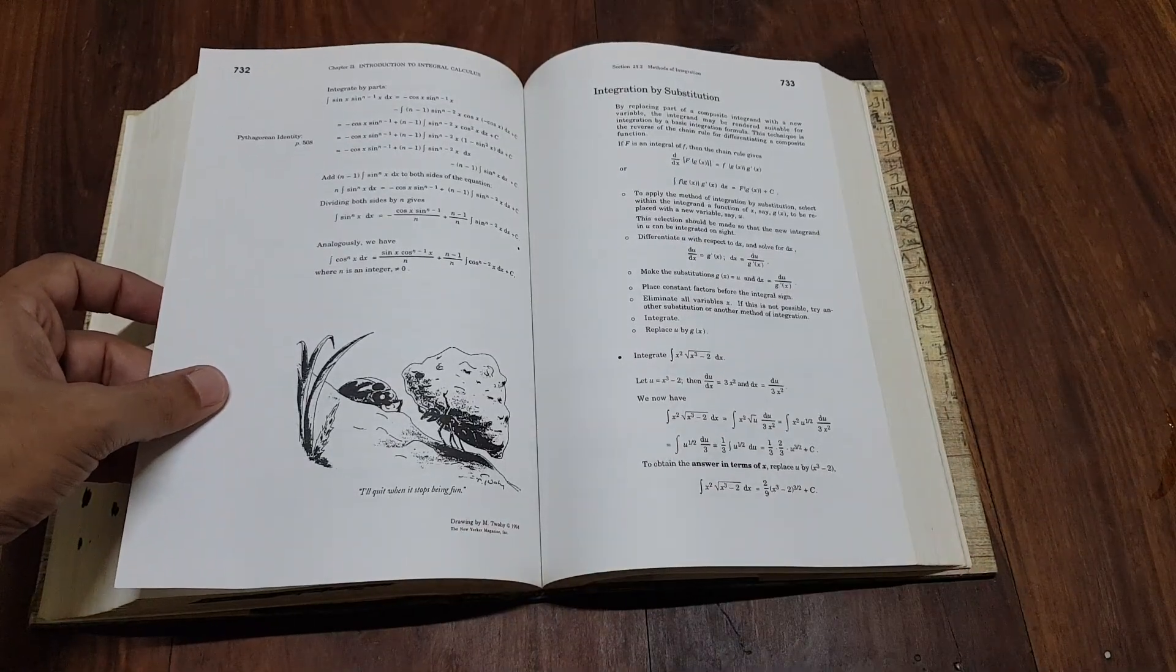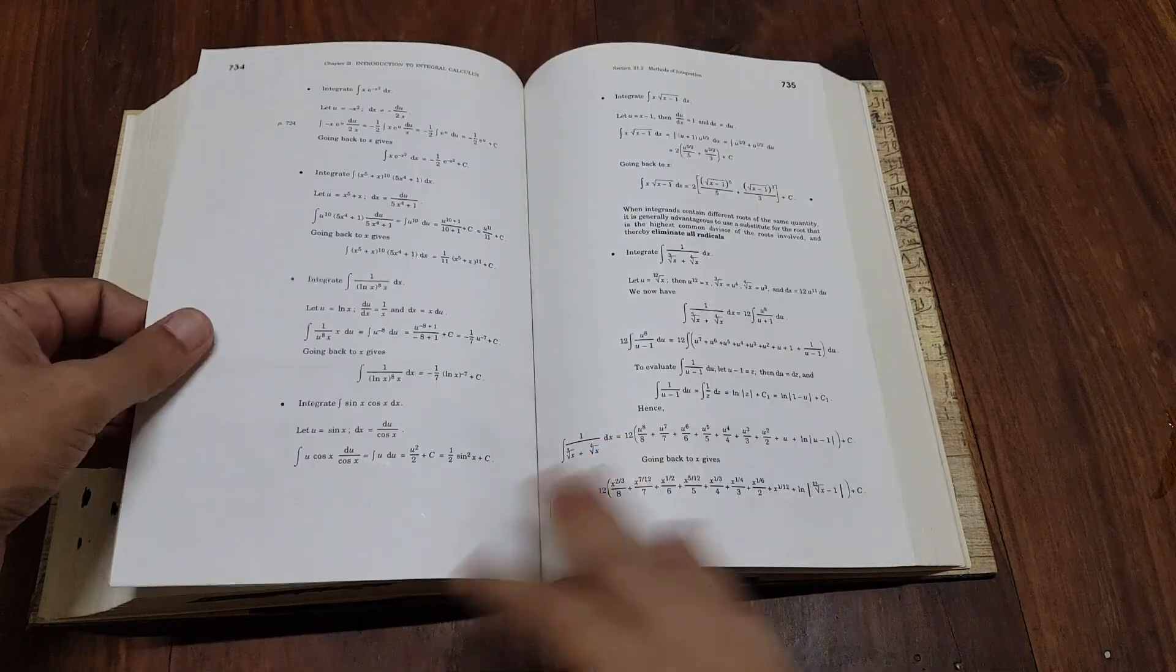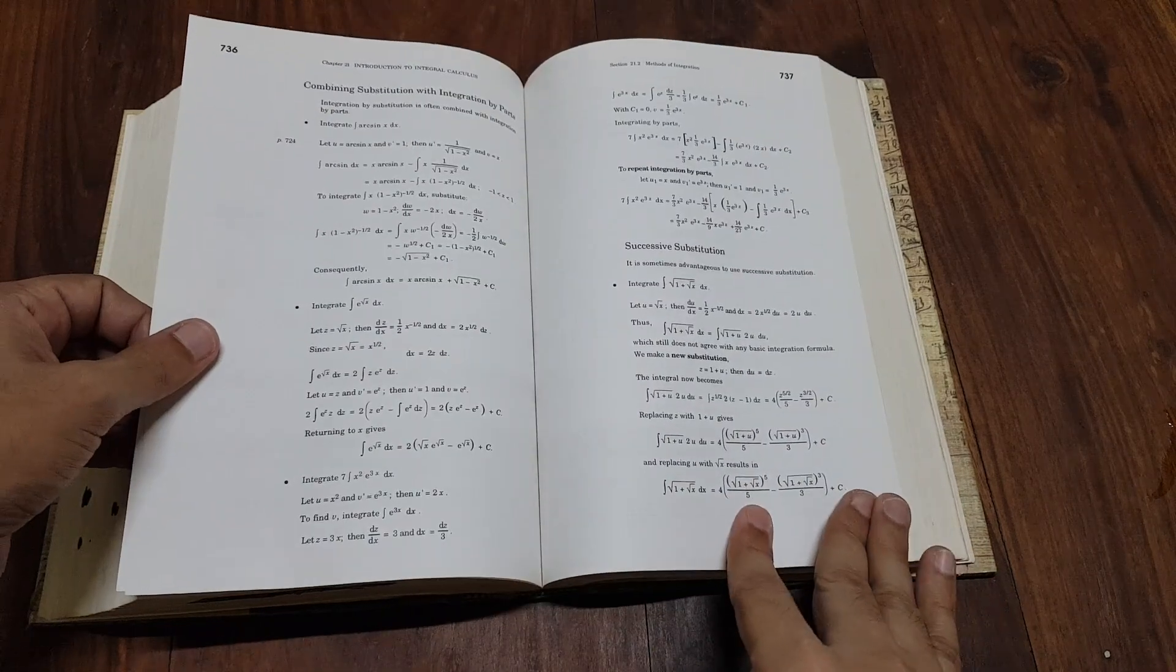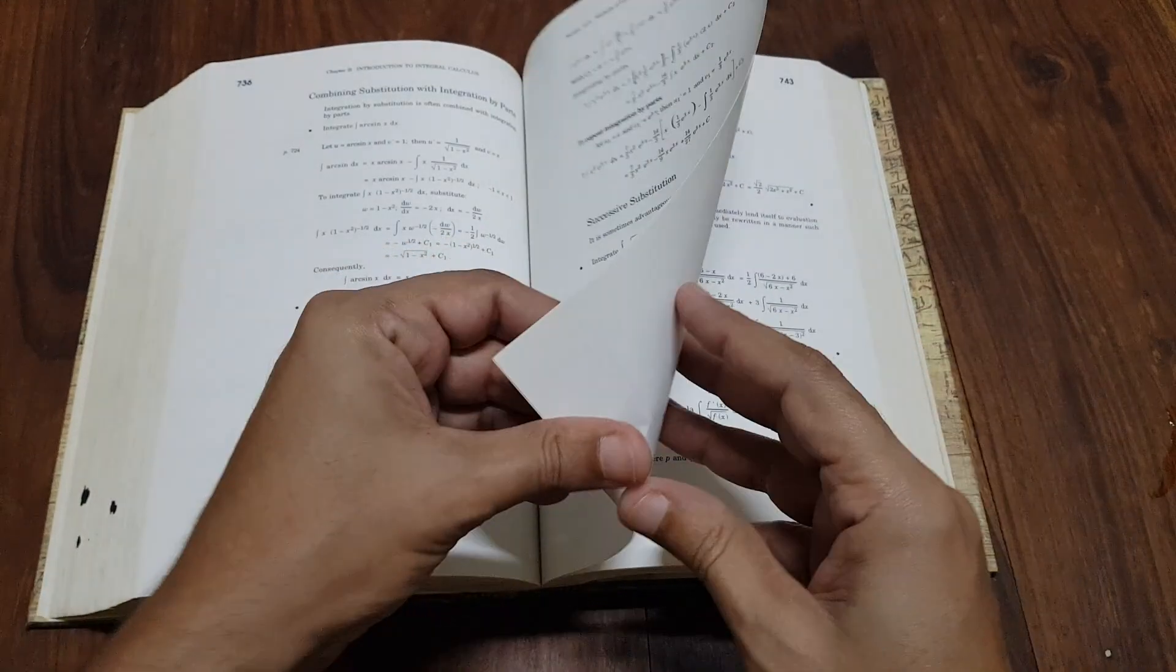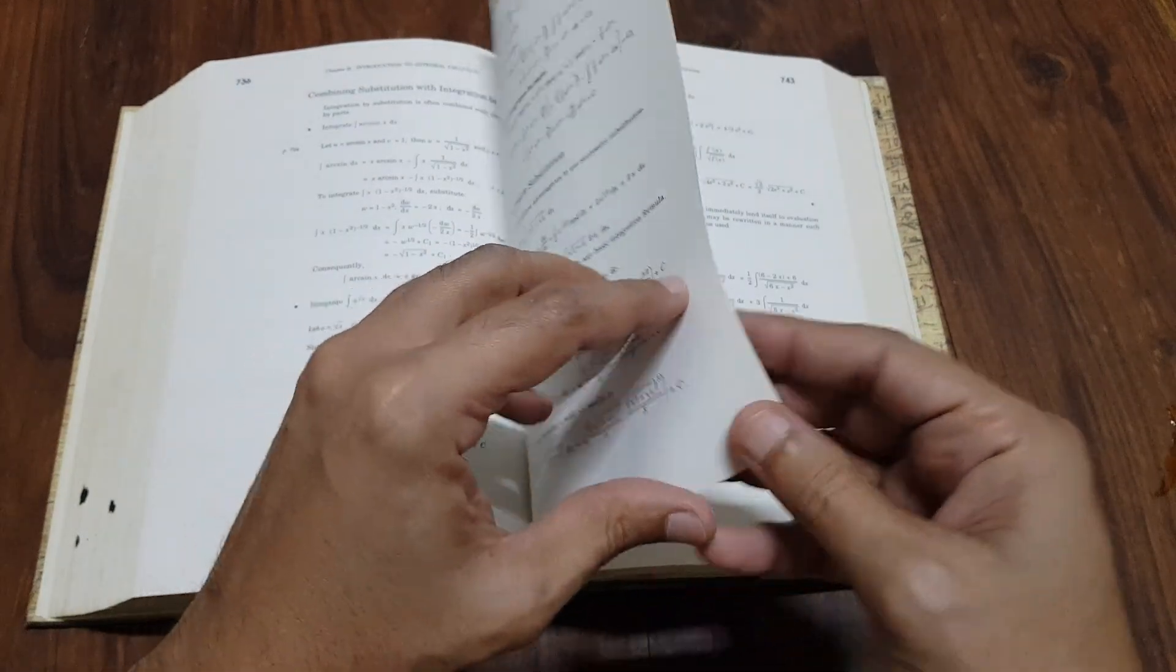Length and density. At over 1,000 pages, the book is lengthy and dense, which might be daunting for some readers. The extensive detail, while a strength, can also make it a slow read for those looking for a quicker overview.